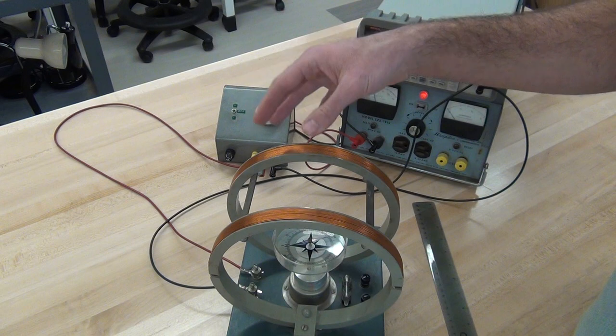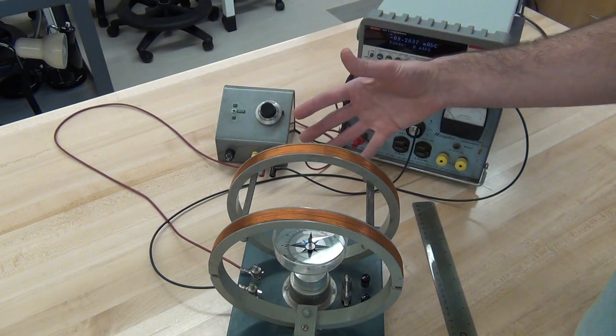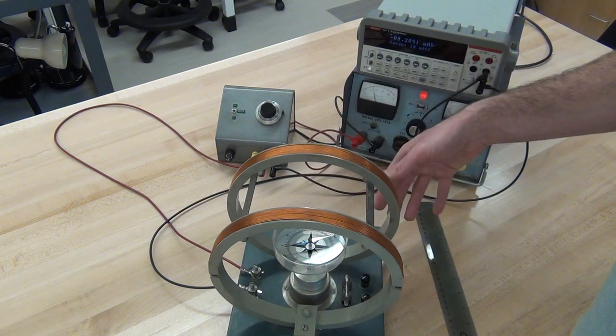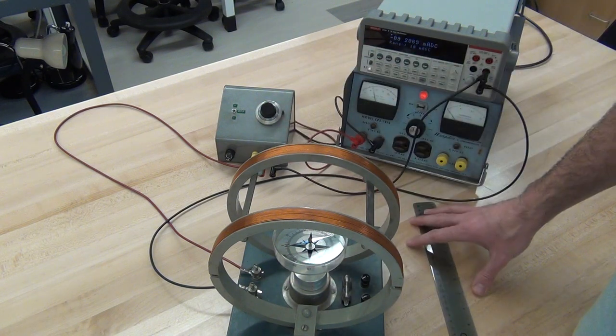The combination of the deflection, the current, and the calculation of the field that we've applied with our Helmholtz coil will allow us to calculate the local horizontal field strength.